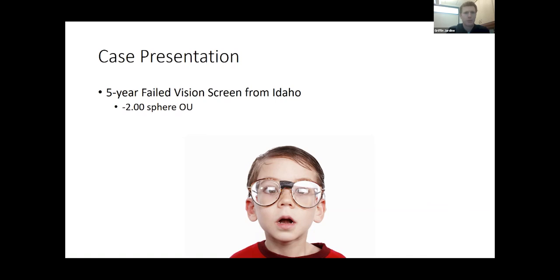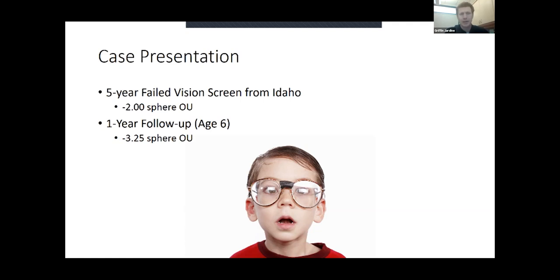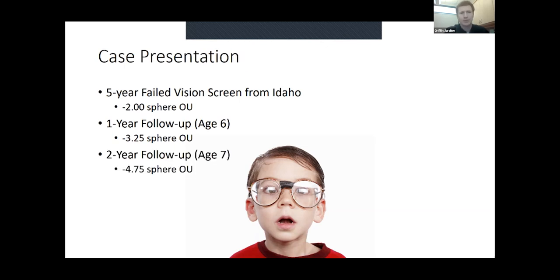They had an otherwise normal exam except they were already minus two, which would be a pretty young age to be already myopic. Most kids start off hyperopic as they move towards emmetropization. I talked to the family, said we would just start with glasses and watch this. Within a year, they'd already progressed to minus three and a quarter. If myopia in childhood progresses over a diopter a year, it is considered rapidly progressive.